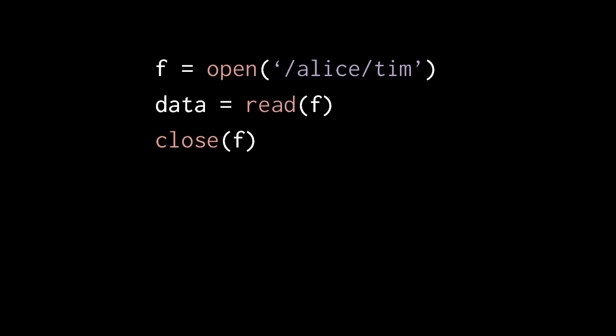While it is left up to read to decide how much data to return, read is always guaranteed to return some amount of data when there is data in the file left to be read. Read will only return no data in the special case when you are attempting to read at the very end of the file. If read were to return nothing when there is still data left to be read, that would falsely indicate to the program that the end of file has been reached.